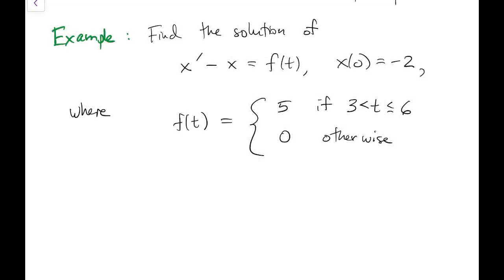So here's an example where the forcing function in this equation is turned on. It's 5 between time 3 and time 6 and 0 everywhere else.